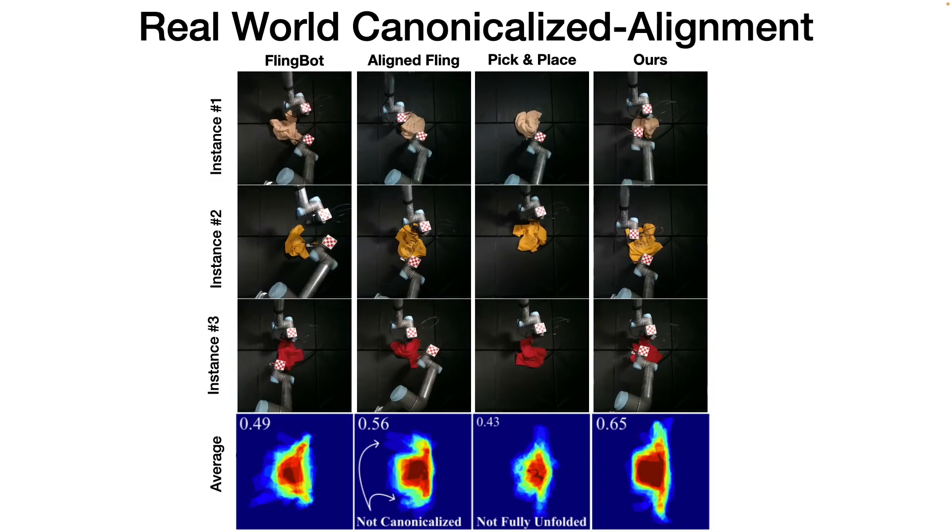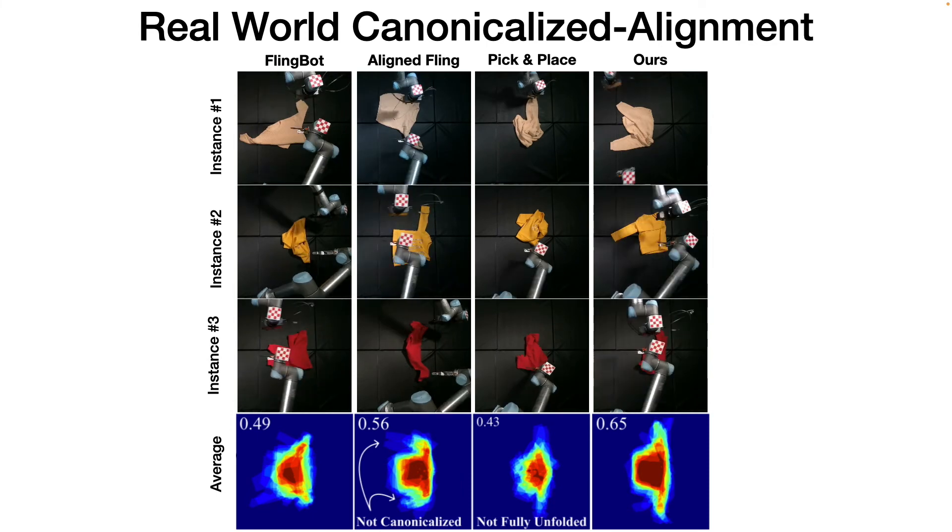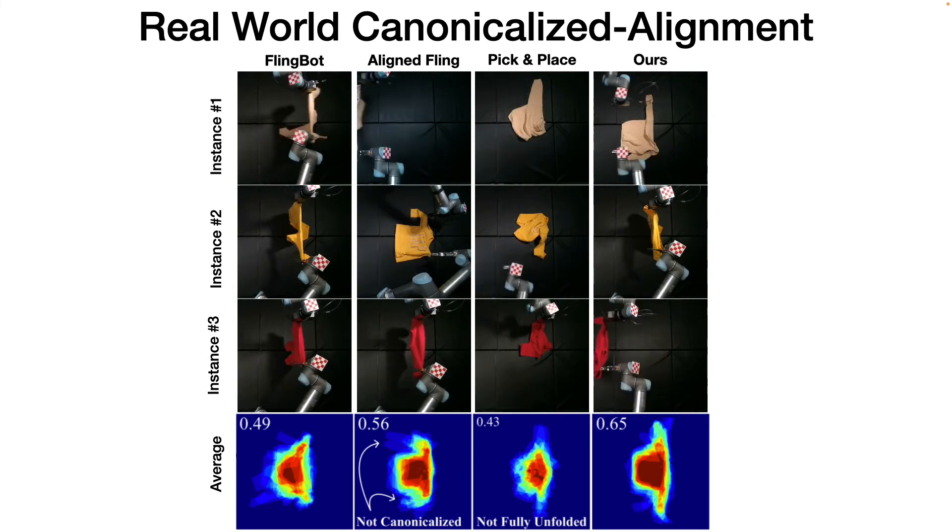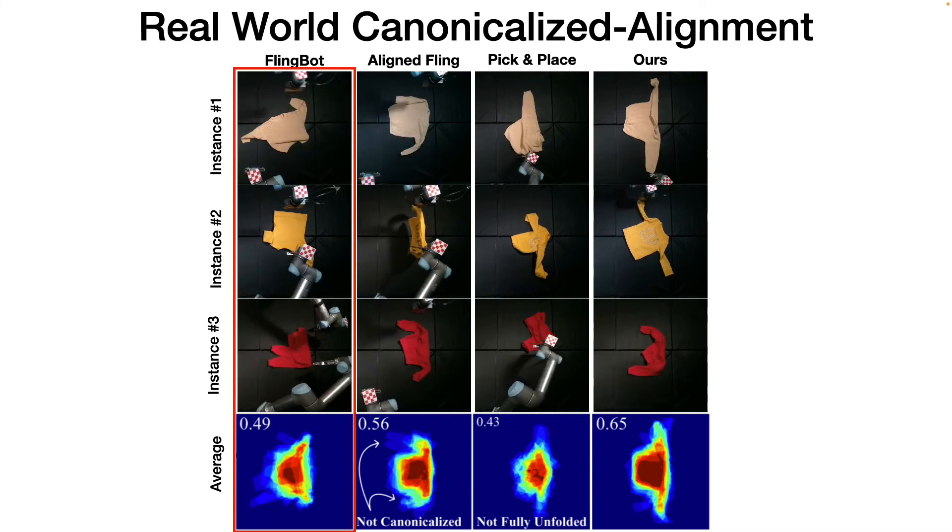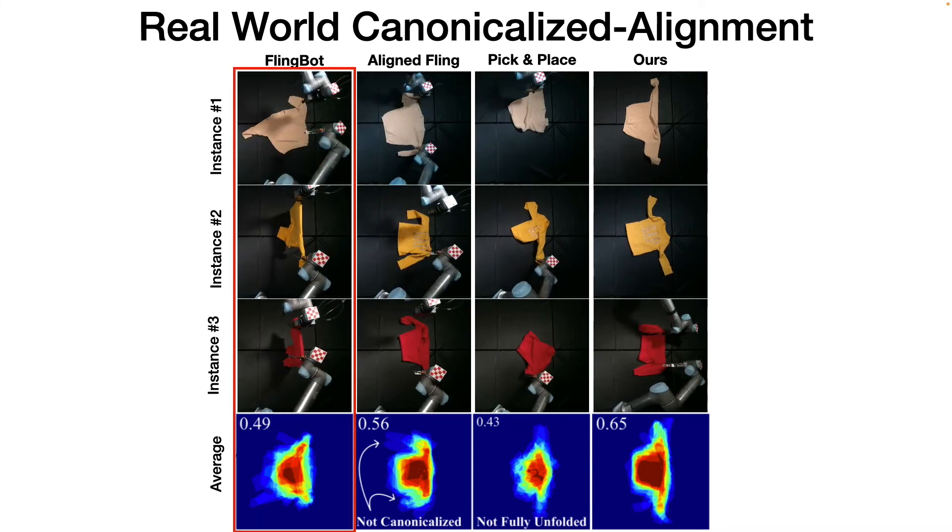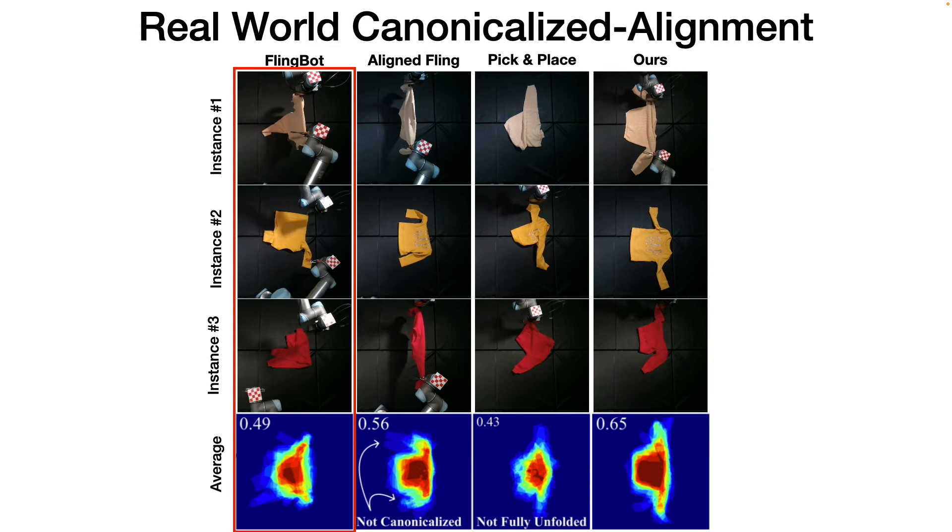Next, we directly deploy our shirt model in the real world without fine-tuning, and we compare our method against three baselines indicated by the first three columns. In the first column, we have Flingbot, which can effectively increase coverage but cannot explicitly align the cloth.